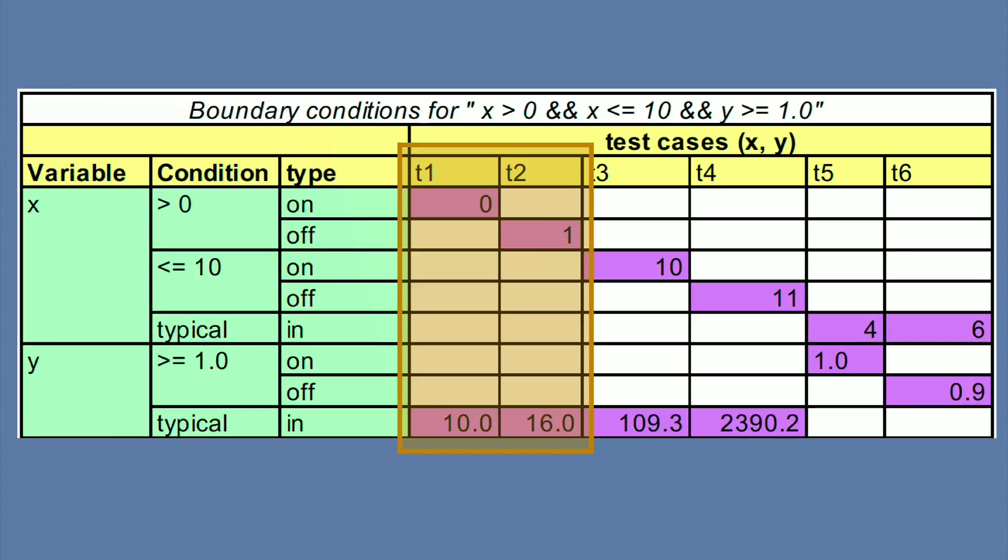For example, for the first boundary condition, x is greater than 0, its on point is 0, and its off point is 1. So this means we're going to have one test, t1, where x is 0, and for y we just pick an in point. For example, I picked 10 for test 1. Then test 2 has the off point 1, and another typical in point for y, let's say 16. And these are the two boundary tests we do for the first condition.